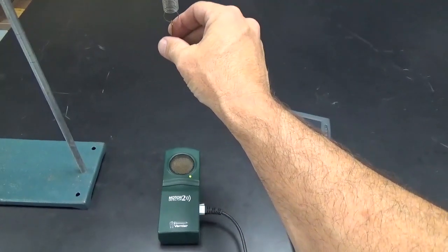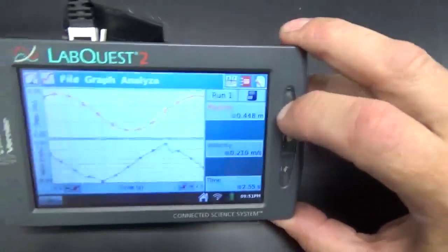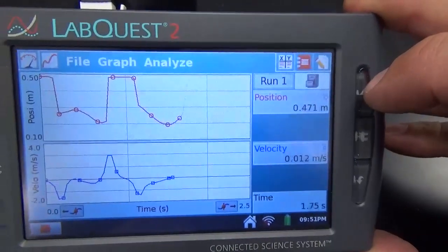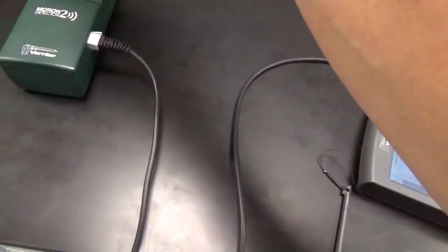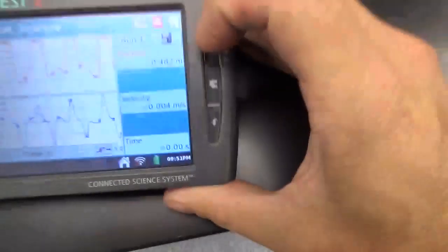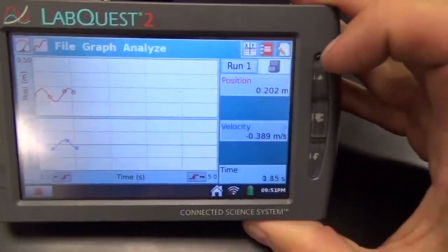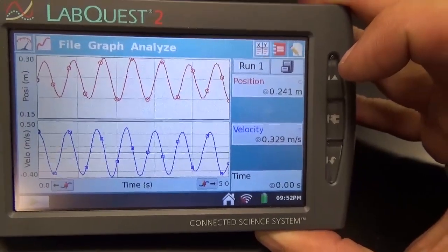Set the mass in oscillation and record some data. Okay, we've got some glitches, so I just adjust it to make sure it's directly over the motion detector. There we go. And we'll try it again. Very nice.